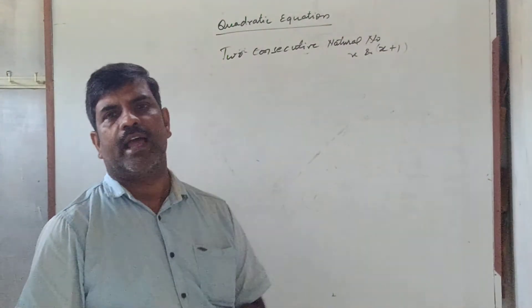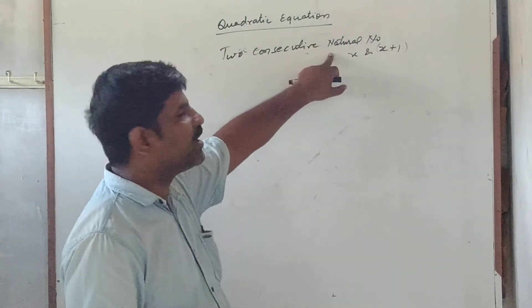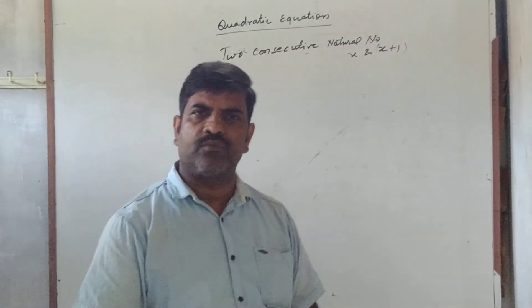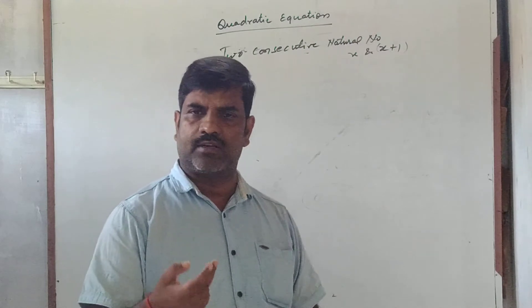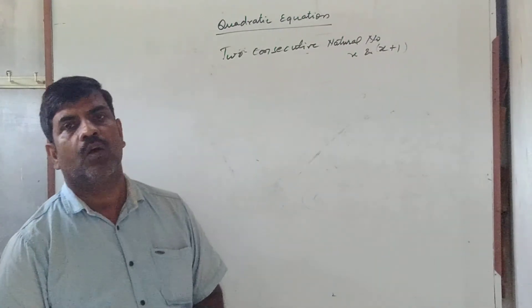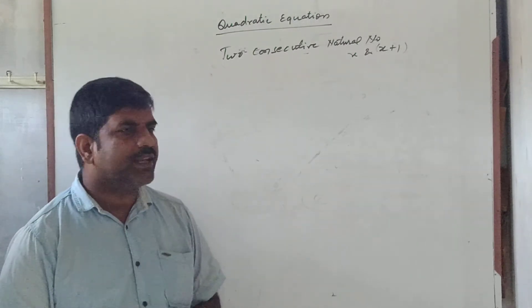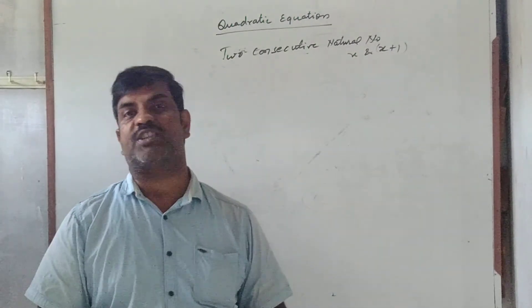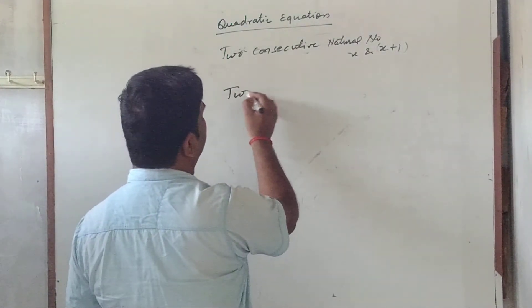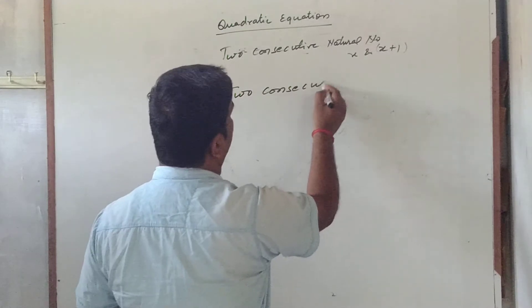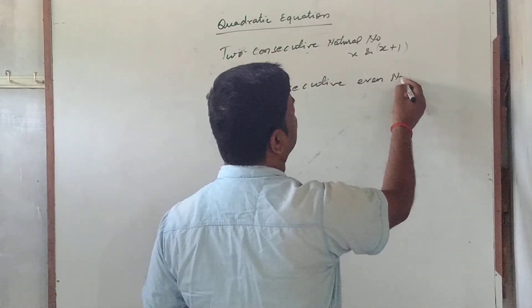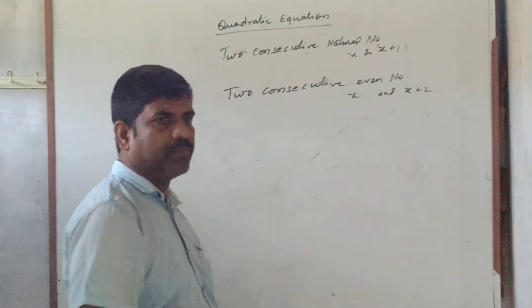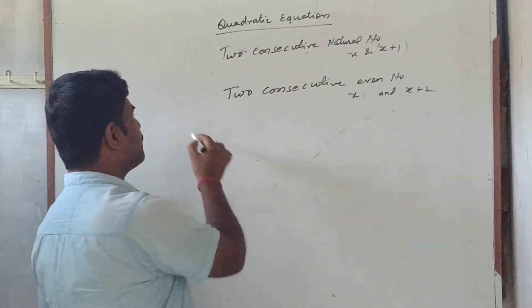If three consecutive numbers are needed, take x, x+1, and x+2. This applies not only to natural numbers but also to integers and whole numbers. If two consecutive even numbers or two consecutive odd numbers are to be taken, assume them as x and x+2, since even and odd numbers differ by 2.